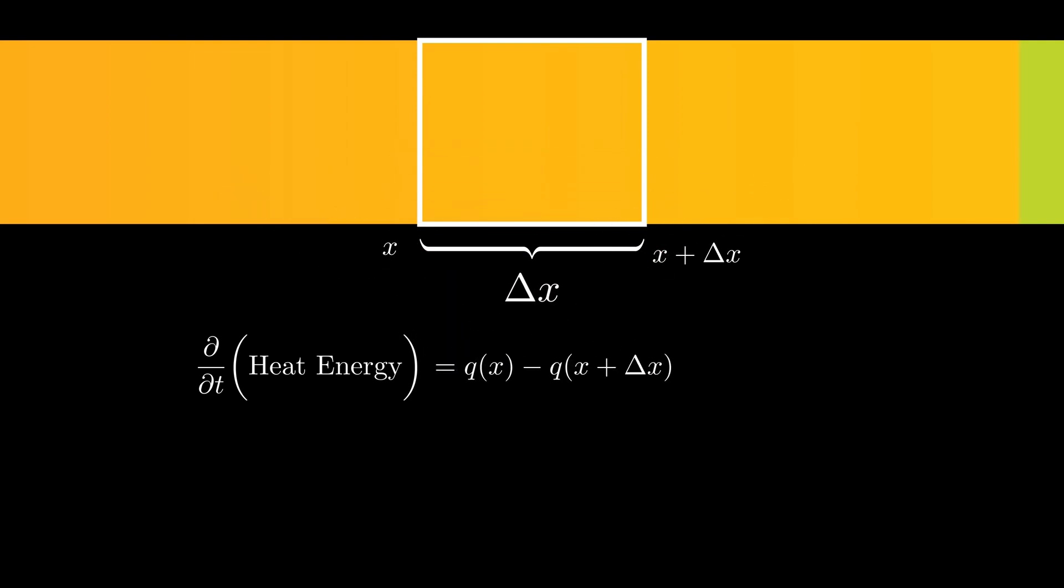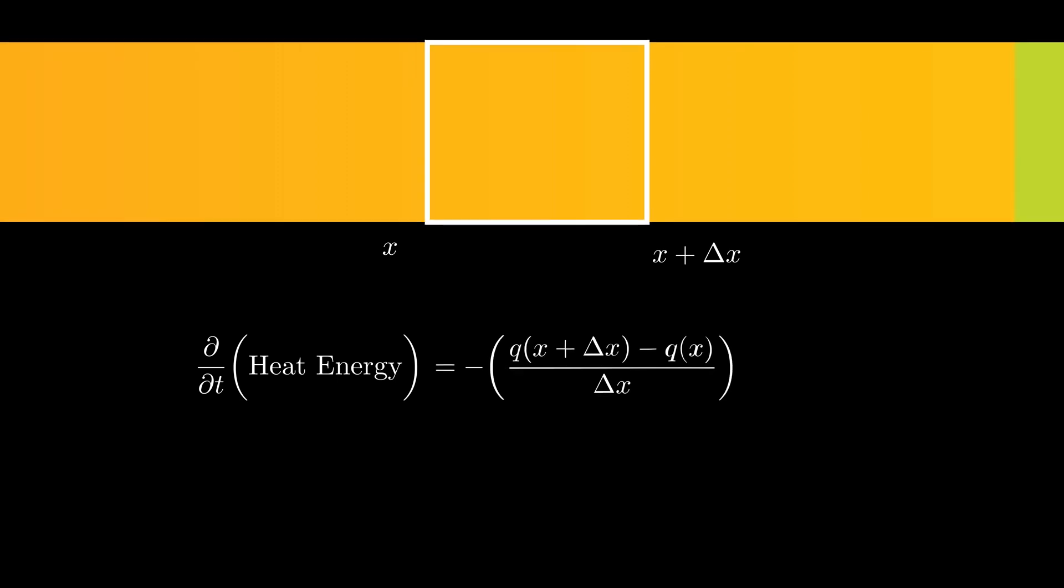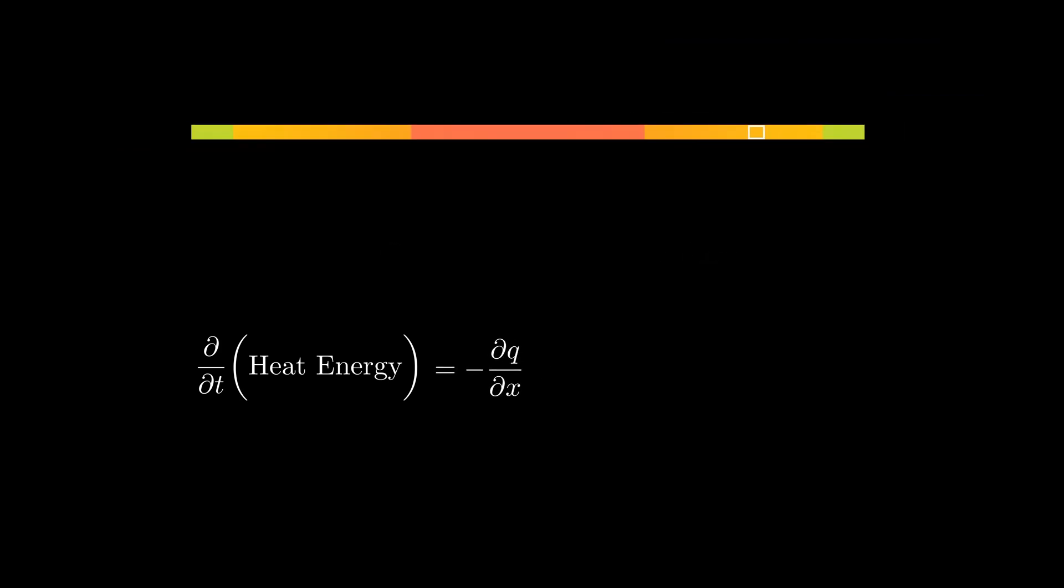Now, as the length of this segment is delta x, I can just divide by this number to get a fair representation for the specific segment. Taking the minus sign out, I can see it taking somewhat a form of a derivative of flux at a point x. In fact, as this segment is really small, I can write this as dq by dx.